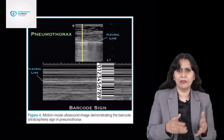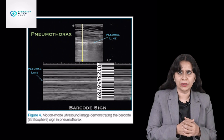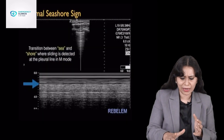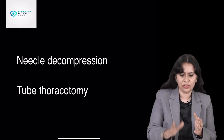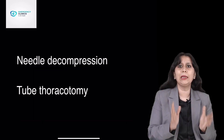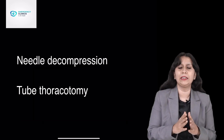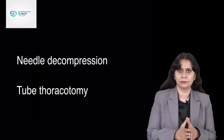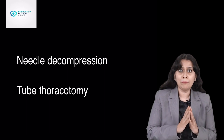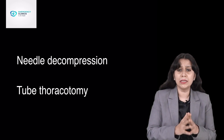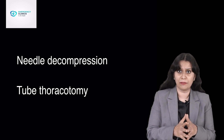The sliding sign would also be lost on 2D lung ultrasound — I would not see the pleura sliding with every breath. In M-mode, I would get the typical barcode sign. This is quick — we can do it bedside. So once I have made the diagnosis of tension pneumothorax, immediately needle decompression has to be performed.